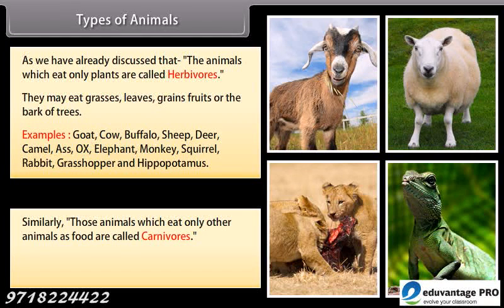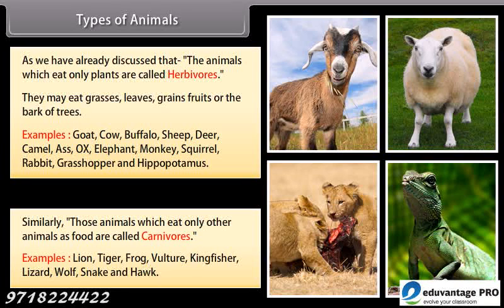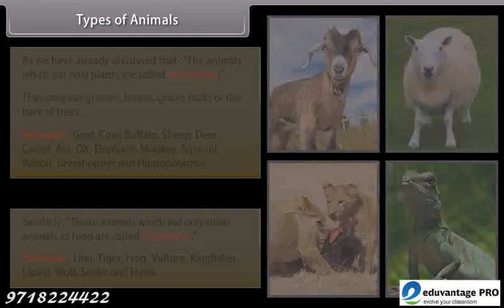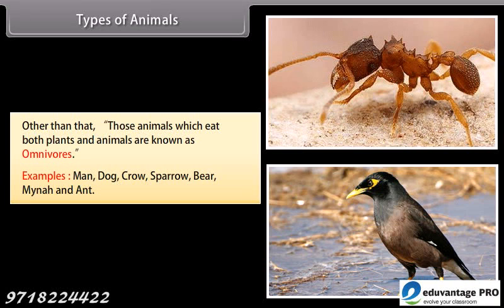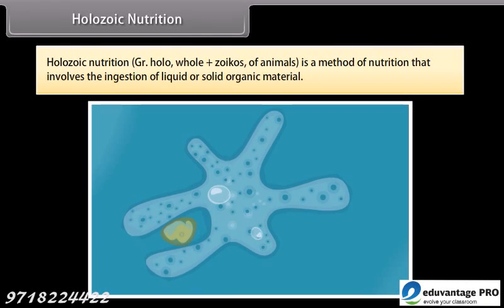Those animals which eat only other animals as food are called carnivores. Examples include lion, tiger, frog, vulture, kingfisher, lizard, wolf, snake, and hawk. Those animals which eat both plants and animals are known as omnivores. Examples include man, dog, crow, sparrow, bear, and ant.